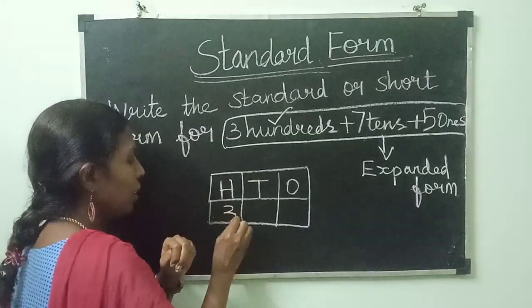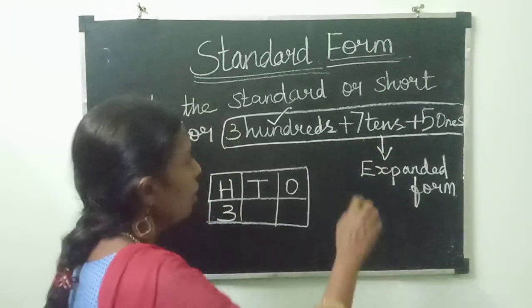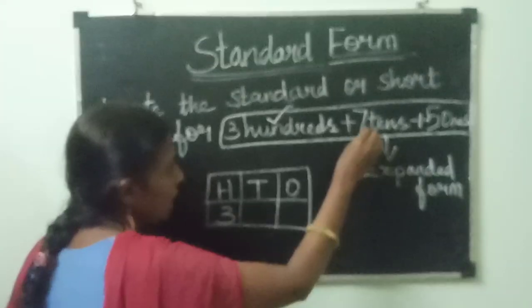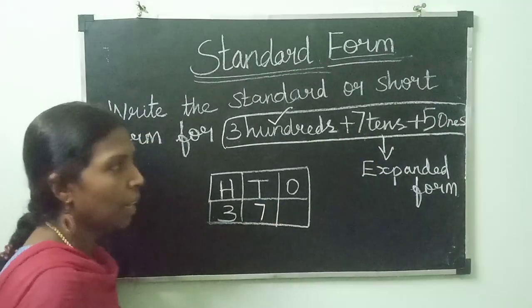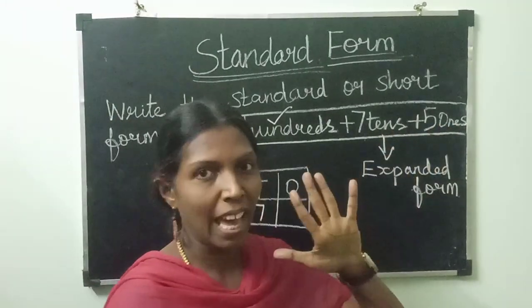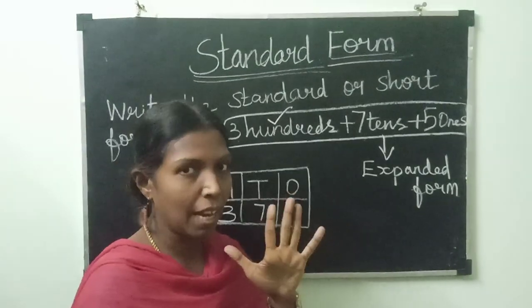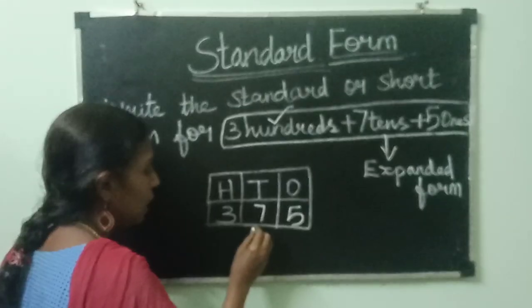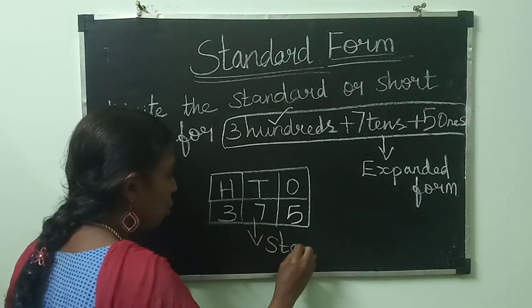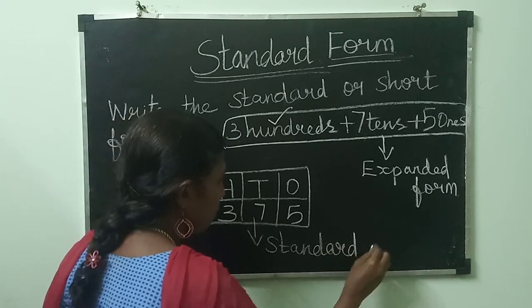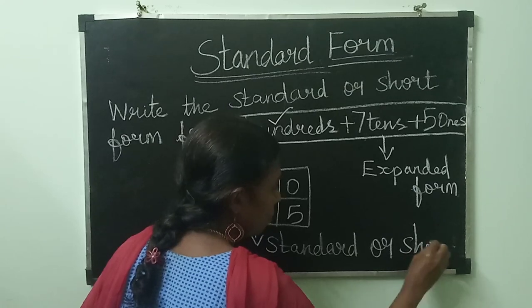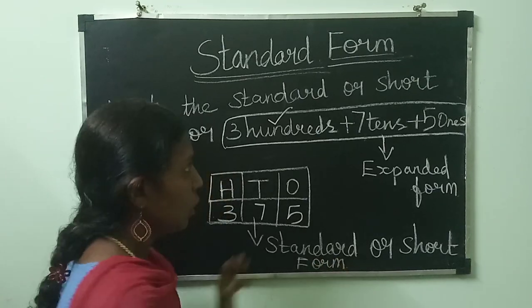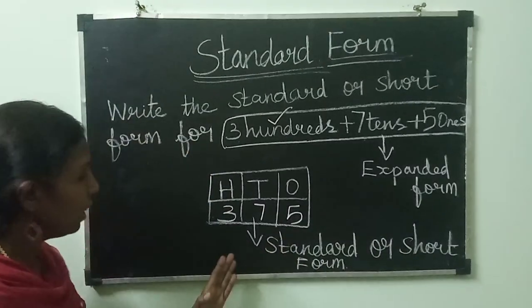Look at the second term — we have seven tens, so we write 7 in the tens column. At last, the final term is five ones, so we write 5 in the ones column. Now see this answer. The answer is in standard form: 375. The question was in expanded form and the answer is in standard form.